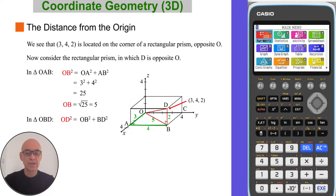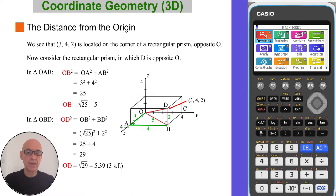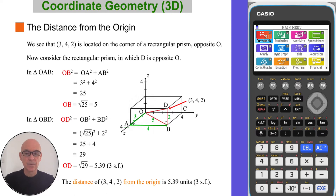Now, if we consider triangle OBD, which is right-angled at angle B, again we can apply Pythagoras' theorem to find the length of OD, the hypotenuse of that triangle. Squaring the lengths of OB and BD and adding the results gives 29. So the length of OD is equal to the square root of 29, which is 5.39. So the distance of the point (3, 4, 2) from the origin is 5.39 units, correct to three significant figures.